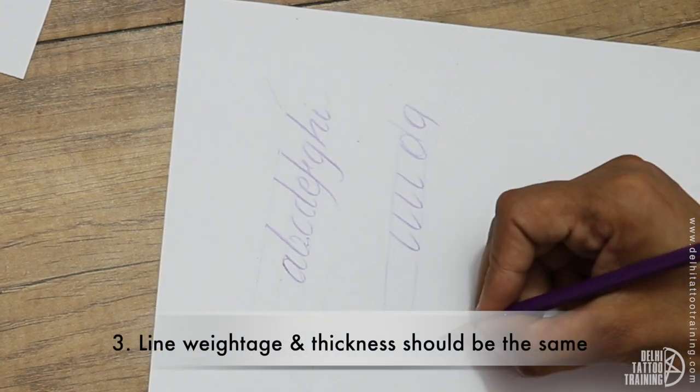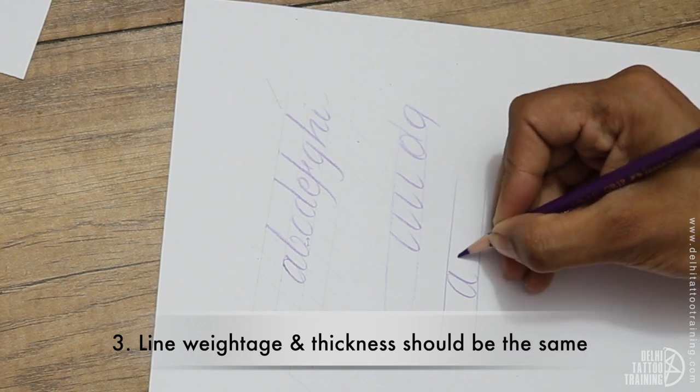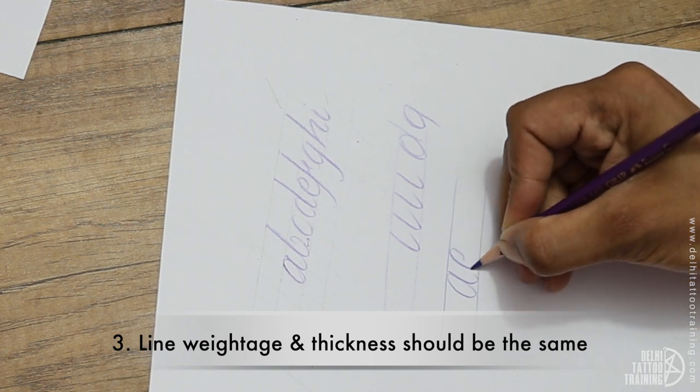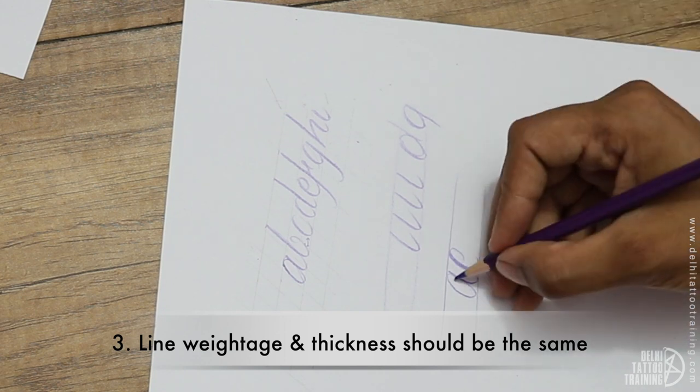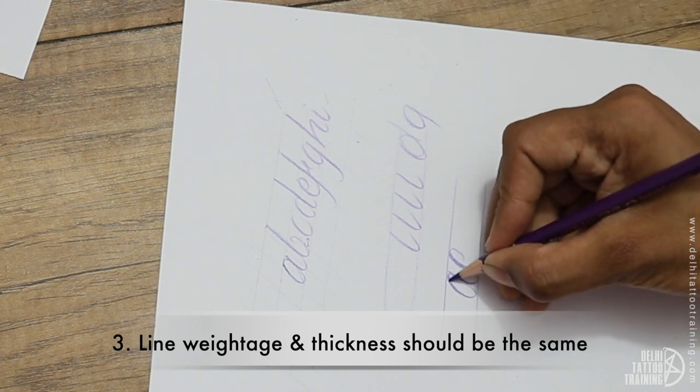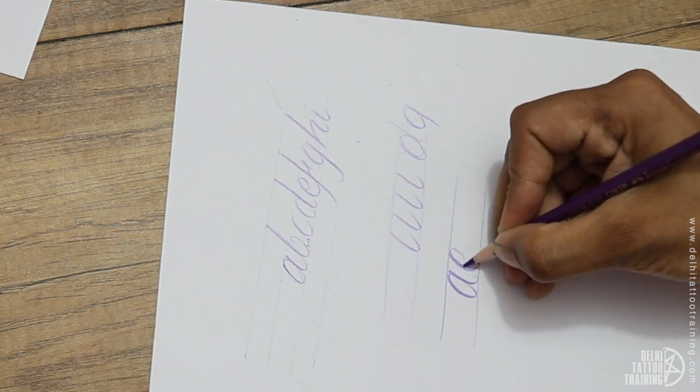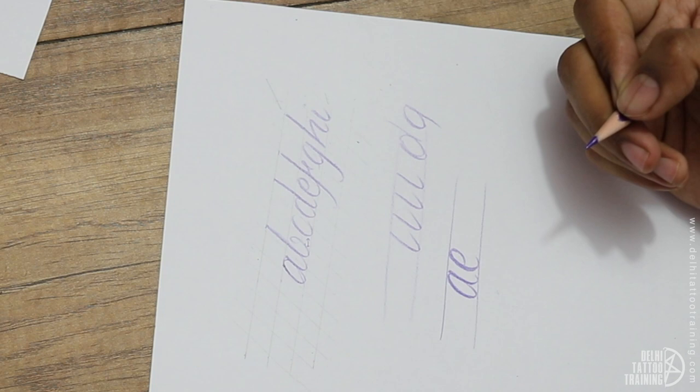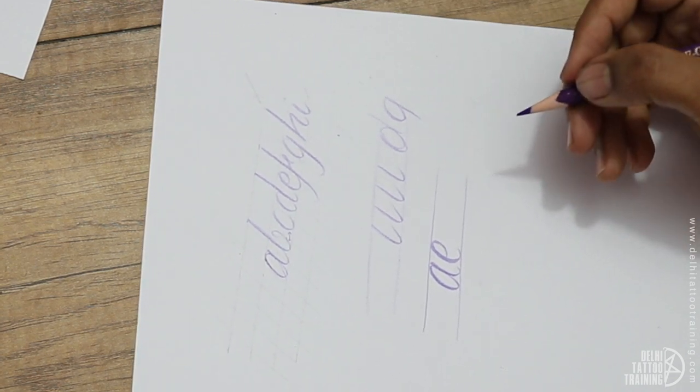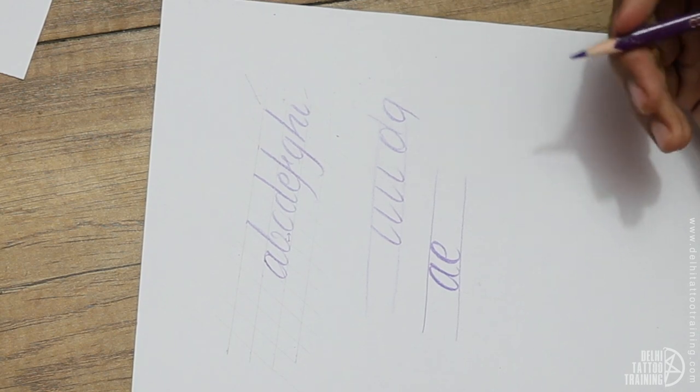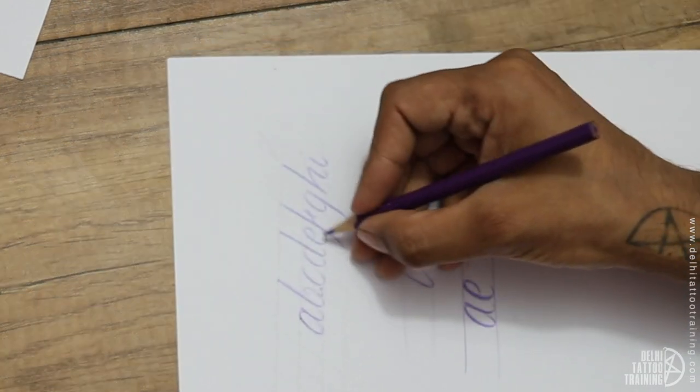Coming to point number 3: the line weightage and thickness. The more the same, the better it is. Now if you see, I have drawn A a bit thin and C a bit thick - it won't look nice. To ensure the same, the weightage of the line should be the same. If we follow these rules, we will surely get a beautiful and symmetrical calligraphy.